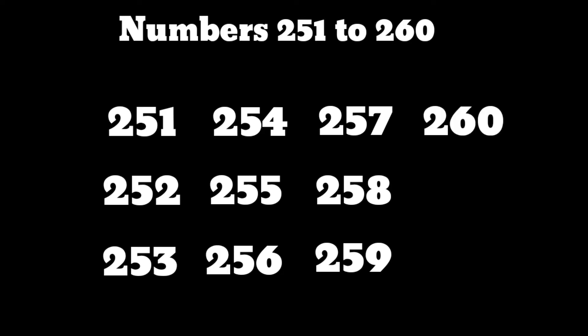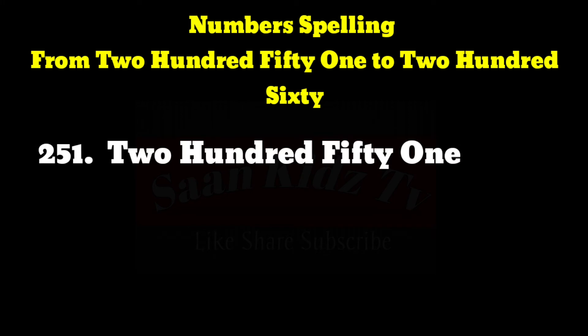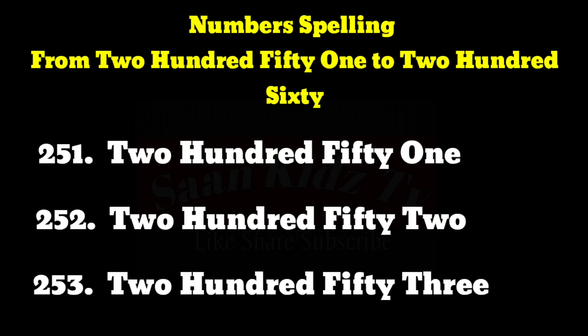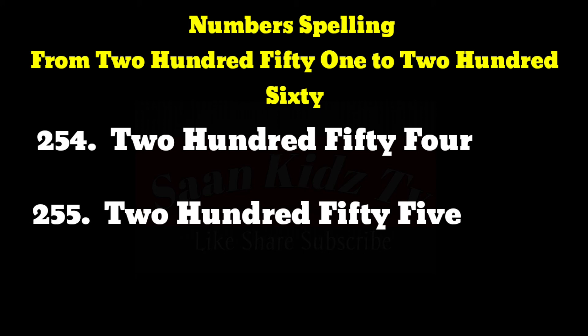Numbers spellings from 251 to 260. TWO HUNDRED FIFTY ONE - 251. TWO HUNDRED FIFTY TWO - 252. TWO HUNDRED FIFTY THREE - 253. TWO HUNDRED FIFTY FOUR - 254. TWO HUNDRED FIFTY FIVE - 255.